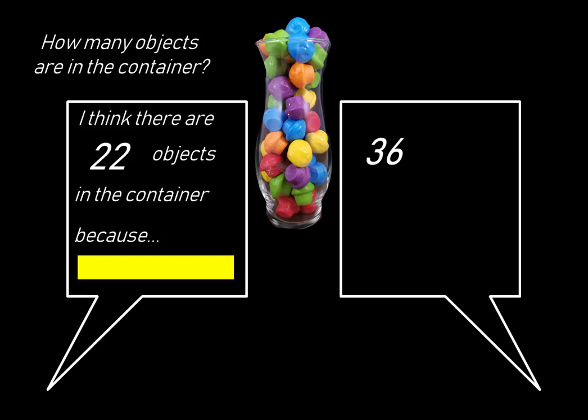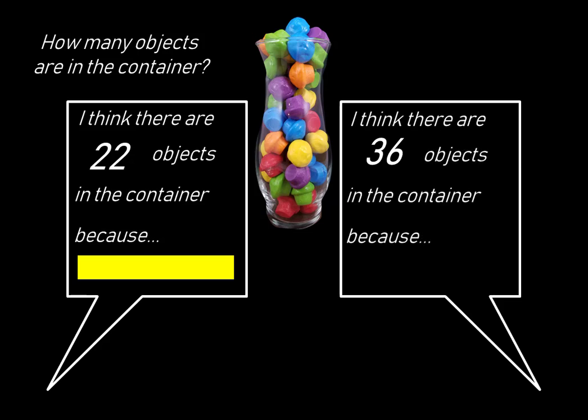Then the second student tells what number they chose, and they explain why. I think there are 36 objects in the container because, and here comes some more rich reasoning.